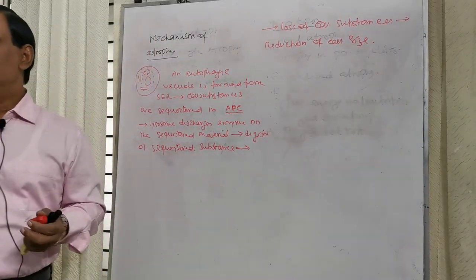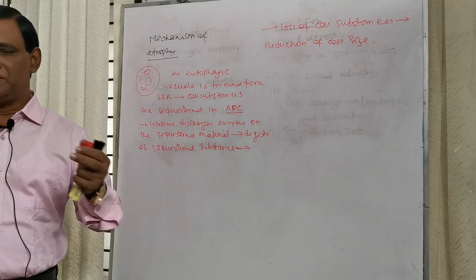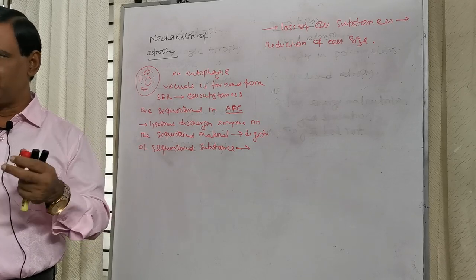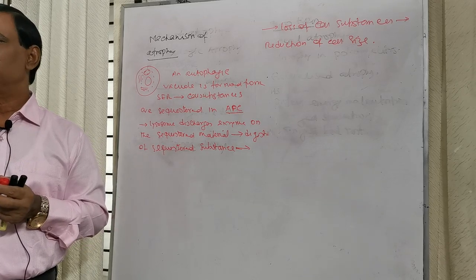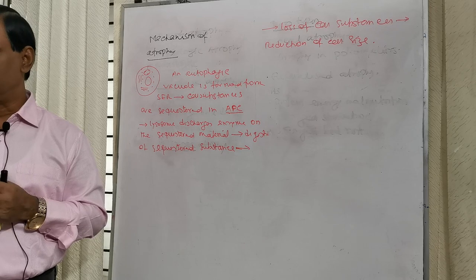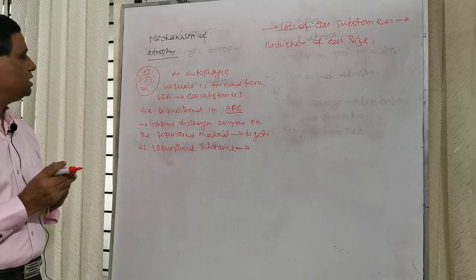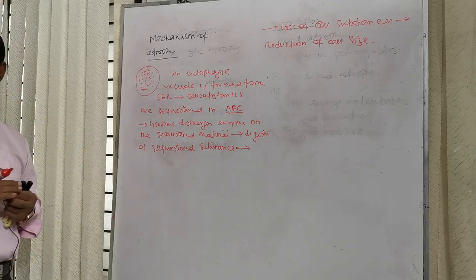The cell membrane has elasticity. As there is loss of substances, due to its elasticity, the cell undergoes shrinkage, and this is atrophy. This is the mechanism of atrophy.